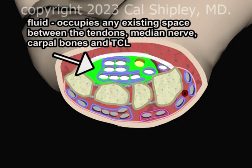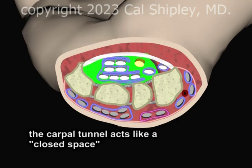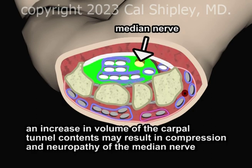The carpal tunnel contains a small amount of fluid, shown in green here. The fluid fills in any space that exists between the tendons, the median nerve, the carpal bones, and the transverse carpal ligament. From a physics point of view, the carpal tunnel acts like a closed space. In other words, if the volume of any of the contents within the carpal tunnel increases, pressure within the tunnel will also be increased, and the median nerve may be compressed, resulting in neuropathy.